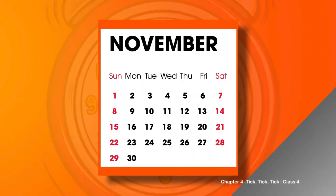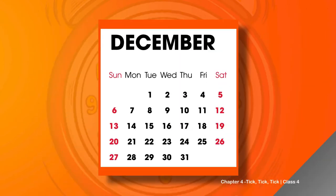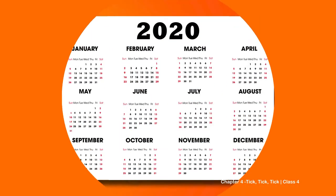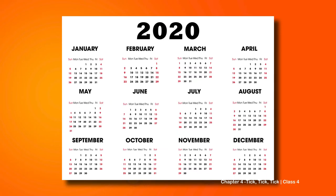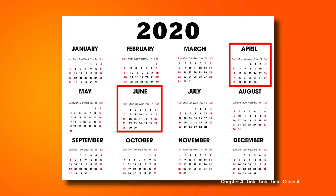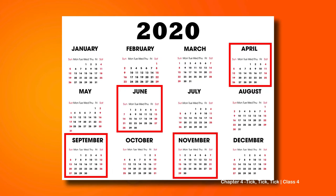Can you name the months of the year? They are January, February, March, April, May, June, July, August, September, October, November, and December. Now look at this calendar. Which of these months have 30 days? Yes, you are right - April, June, September, and November. Now tell me, which is the shortest month?